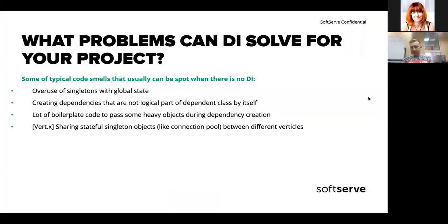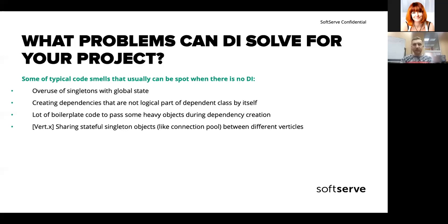There are even frameworks that don't have DI by default — for example, the Vert.x framework. If you need it, you can add plugins or extensions, but I think it's a bad idea to add DI just because it's cool or because Spring uses it. You should investigate a little bit, spot some problems in your project, and then decide if DI can solve those problems. From my experience, a typical issue when not using dependency injection is a lot of singletons.